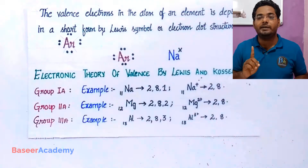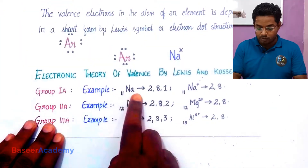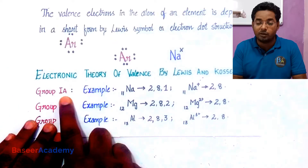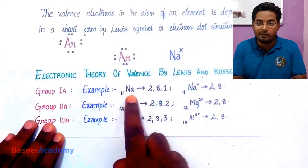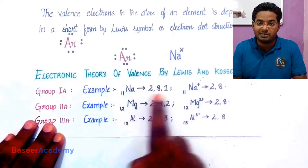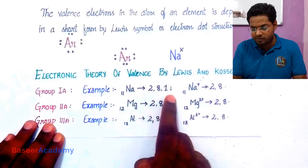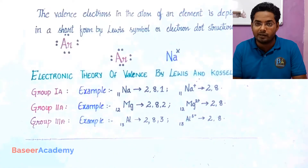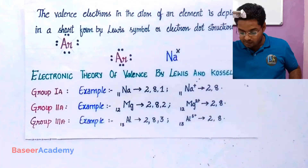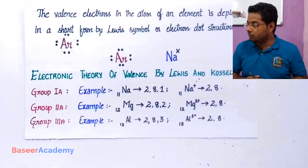We'll look at one element from each group. Looking at sodium from group 1A, the atomic number of sodium is 11, so the electronic configuration is 2, 8, 1. Sodium has one electron in the outermost orbit.